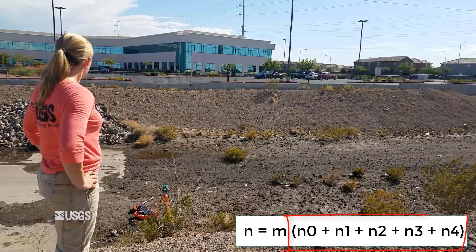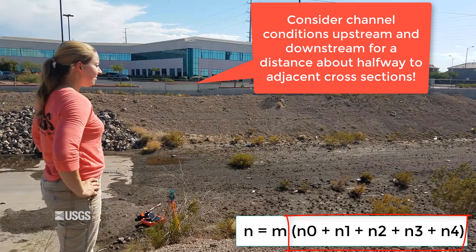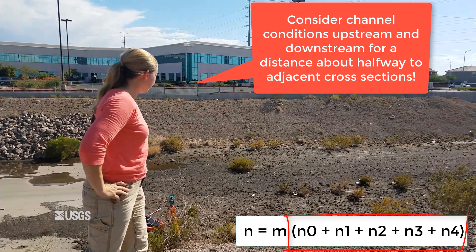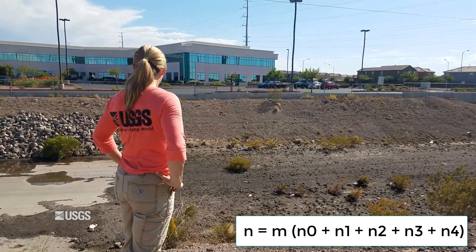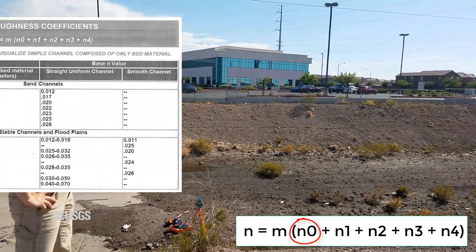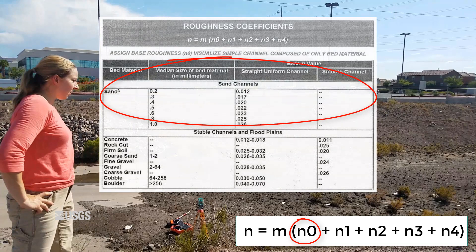As we did for the comparative method, consider channel conditions upstream and downstream for a distance about halfway to adjacent cross sections. The first variable, n0, is the base roughness, determined by looking at a table and choosing a value based on your predominant bed material. Looking at our channel, this is definitely a sand channel — it looks like fine to medium sand to me — so I'm going to use 0.020 for n0.